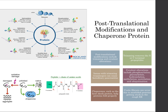Post-translational modifications of proteins include trimming as well as covalent modifications. Chaperones are also involved after proteins are synthesized by ensuring that the protein is folded properly, and they can also make sure other proteins are folded properly. For example, a denatured or damaged protein can also be taken by a chaperone and folded back into its original form.